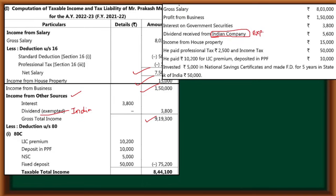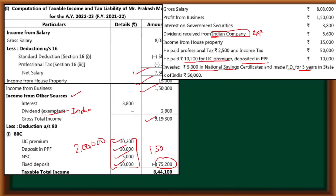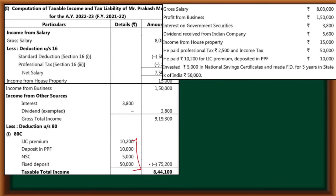Now we'll move to the deductions. Let's check remaining information once more so nothing is missed. He paid 10,200 LIC, deposited PPF, 5,000 National Savings Certificate, and FD — but only a 5-year FD is allowed as deduction; a regular FD is not. So items 1, 2, 3, 4 — their total is 75,200. Maximum under section 80C allowed is 1,50,000. Since the total is 75,200 — which is less than 1,50,000 — we can take the full 75,200. So total taxable income becomes 8,44,100.